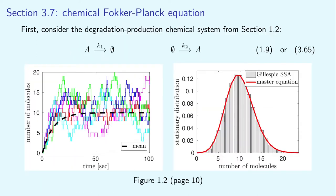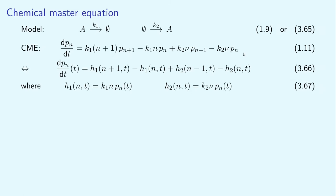First, let us consider the degradation and production system, which we know very well. It is system 1-9, which is also included at the beginning of section 3-7 as system 3-65. We discussed in detail how it can be analyzed and simulated in chapter 1. In figure 1-2a, we used the Gillespie algorithm to calculate illustrative stochastic realizations, and we calculated its stationary distribution in figure 1-2b, using both stochastic simulations and an analytical approach based on the chemical master equation. The chemical master equation is the equation for P(n), the probability that there are N molecules of chemical species A in the system at time t. It has been given as equation 1-11 in the lecture notes. In section 3-7, I rewrote it in a slightly different but equivalent form using functions h1 and h2 defined by equation 367.